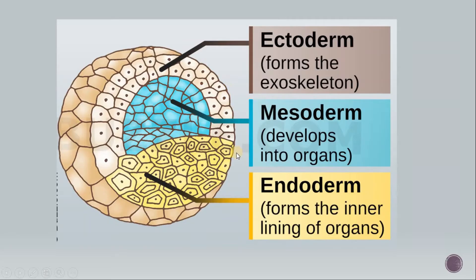In this picture you can see the outermost layer, ectoderm, which surrounds the mesoderm and endoderm. It forms the exoskeleton of the animal's body. The innermost layer, endoderm, is surrounded by mesoderm and ectoderm and forms the inner lining of organs or the gut. Between ectoderm and endoderm, the mesoderm is found and it develops into the organs.